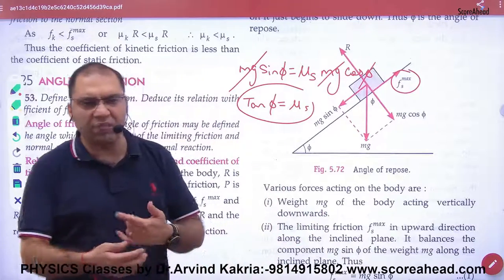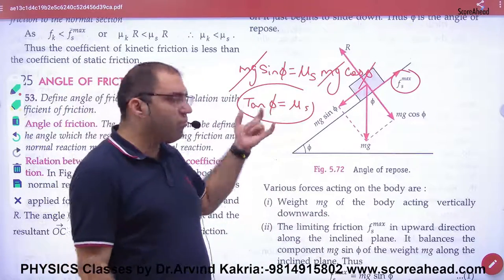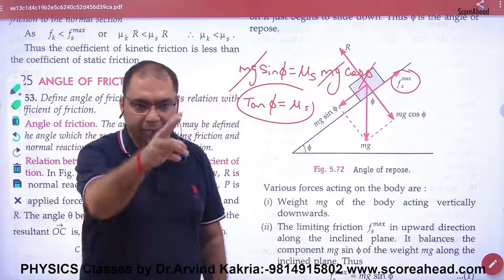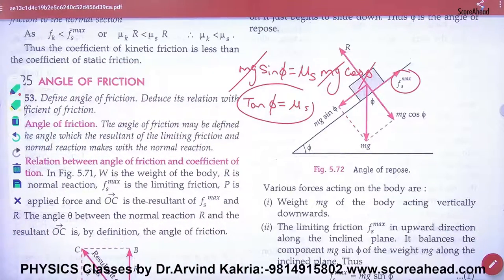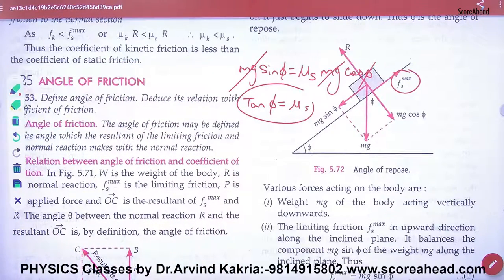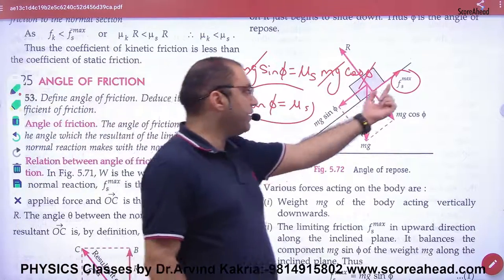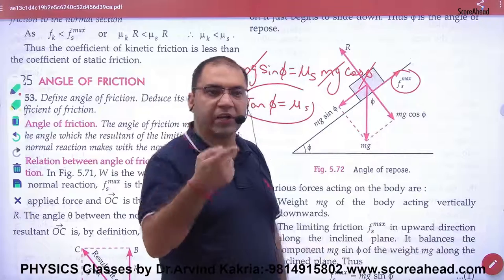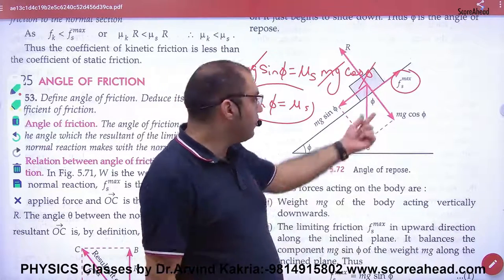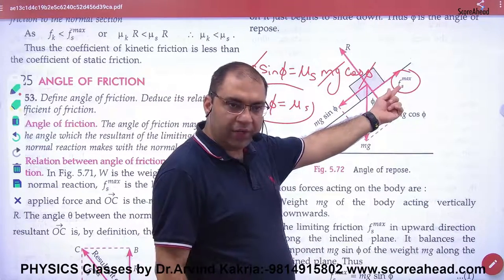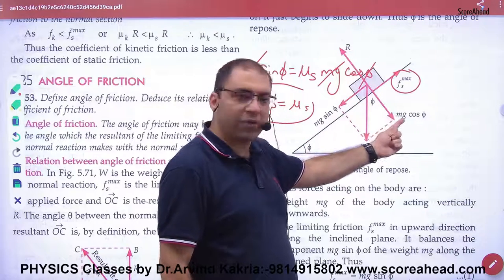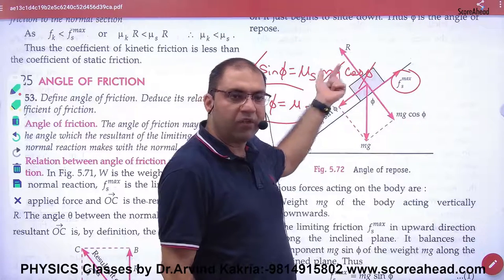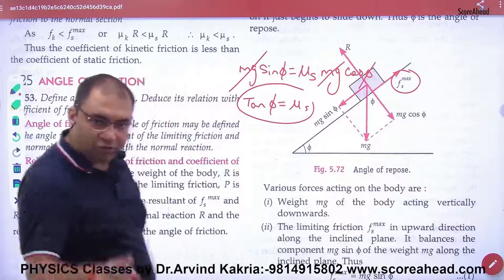So if there is a requirement to find the minimum angle, then we will find the minimum angle from this formula. This mg sin phi is equal to maximum static friction, which is mu times normal reaction, so mu s, because it is static, and the normal reaction here is mg cos phi. So mu times normal reaction. I have put force of friction.